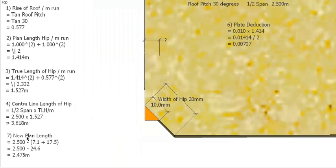So our new plan length: we take our 2.5 which is our original half span, we minus the 7mm for the deduction down here at the plate, and we minus 17.5mm for the deduction up at the ridge. That gives us a total deduction of 24.6mm, or you can round that up to 25. So 2.5 minus 25mm gives you a new plan length of 2.475mm.